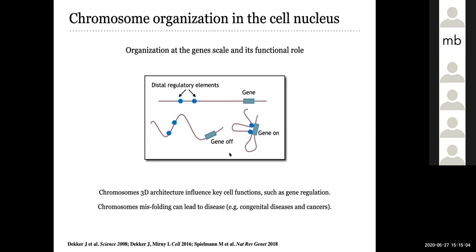To summarize, the genome has a complex organization at different scales, going from the single gene to the whole nucleus — four or five orders of magnitude of organization — and all of this organization is functional. The data we are working on leads to the question: what are the mechanisms behind this? How can this pattern emerge and be established, and how can the cell control it?